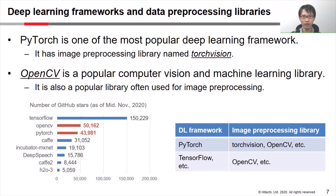OpenCV is a popular computer vision and machine learning library, and it is often used for image preprocessing. In this presentation, we focus on TorchVision and OpenCV.